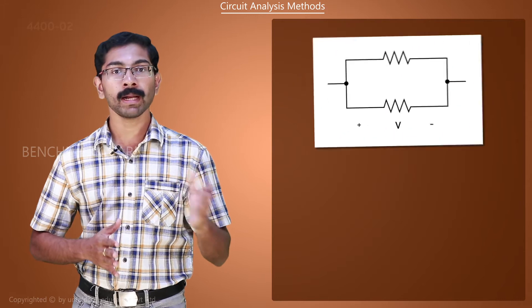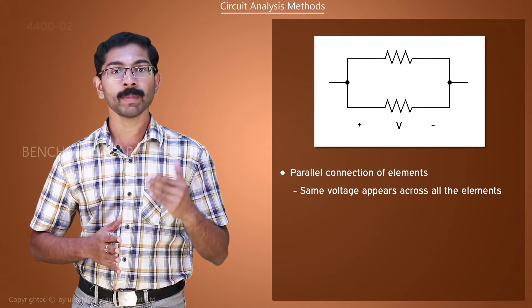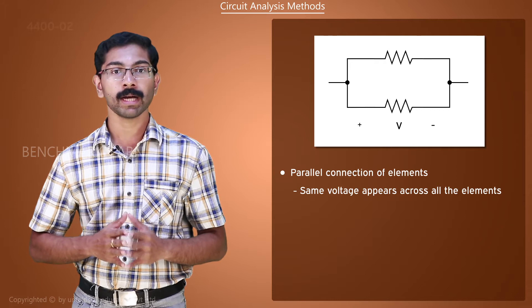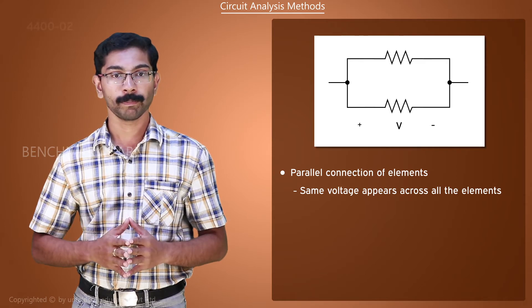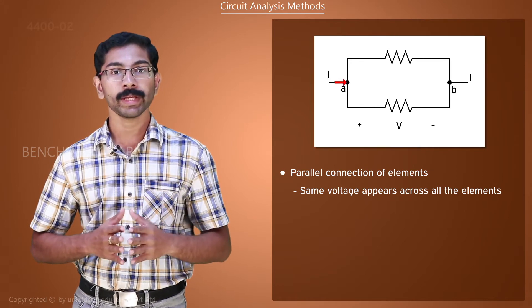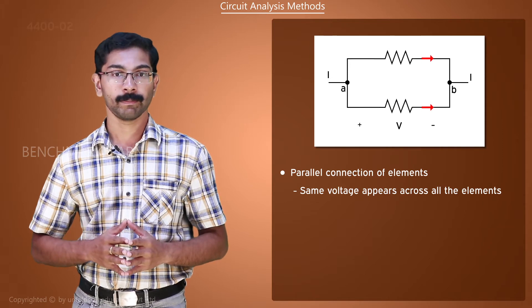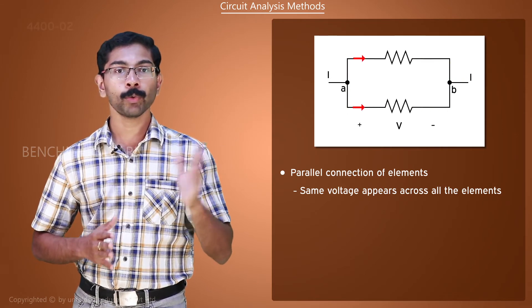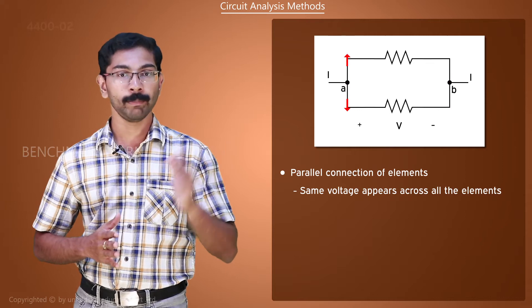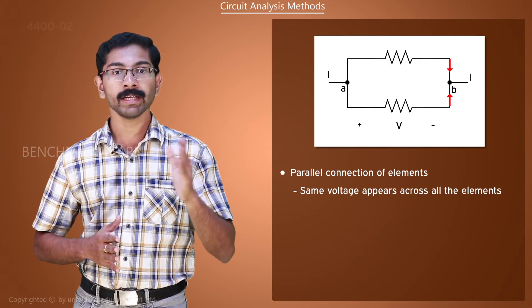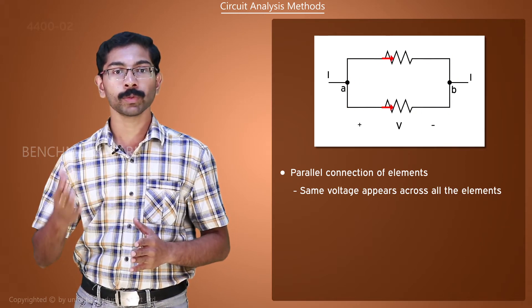In the case of parallel connection, all the elements are connected such that the same voltage appears across each of them. Then the current through each element will be different. In this figure, we have two resistors connected across nodes A and B. Current enters through one node and leaves through the other.